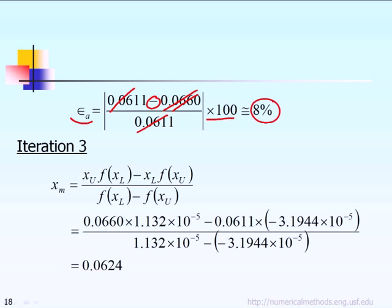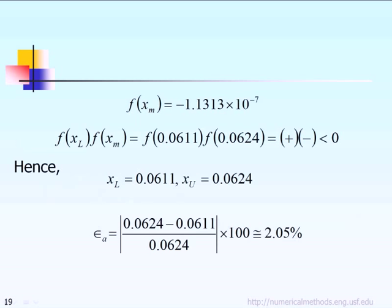I don't want to waste the time. Now we have the new X upper bound, which is 0.066. The new lower bound, X of L is 0.0611. And therefore, the new predicted root X of M is equal to 0.0624. After we calculate the new predicted root, which is X of M, we want to calculate what is the function value at X of M. For doing that, we find out the answer is minus 1.1313 times 10 minus 7. And then finally, we do the same check.